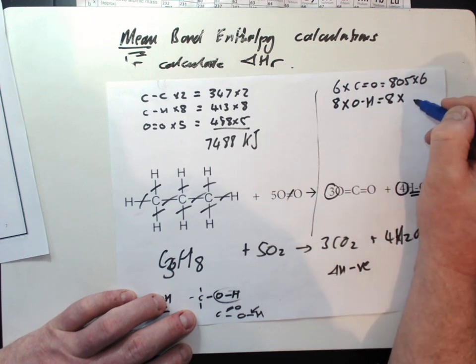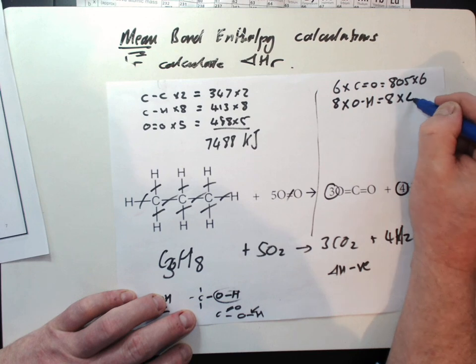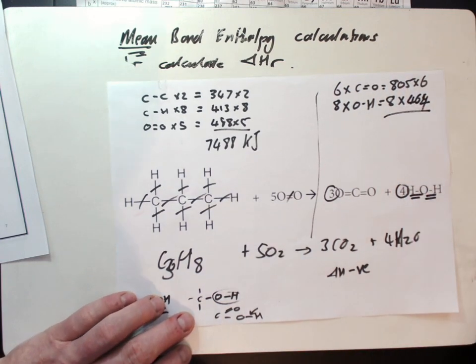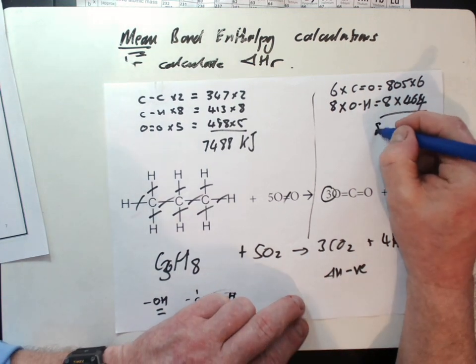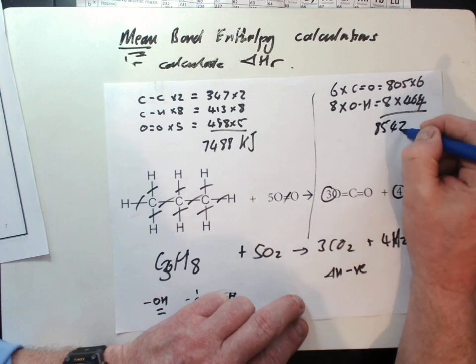Eight times each O-H bond is, sorry, 464. So 805 times six plus 464 times eight. That's 8542.